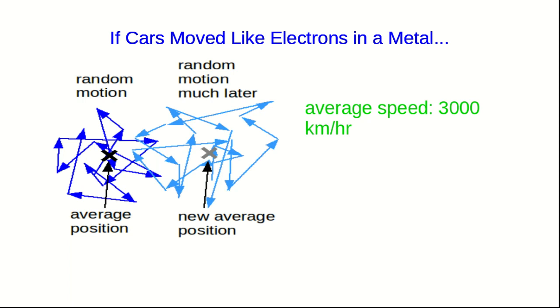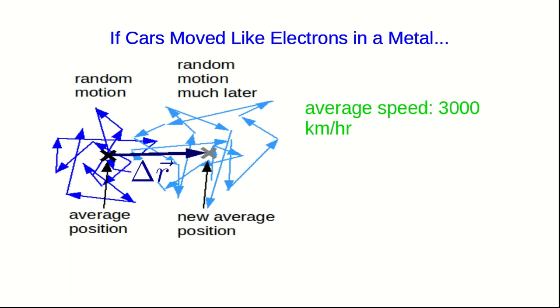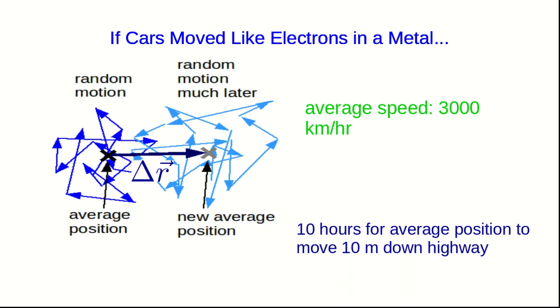And your drift down the highway is such that if we use the same ratio of orders of magnitude as in a metal, it would have taken you about 10 hours for your average position to move about 10 meters down the highway.